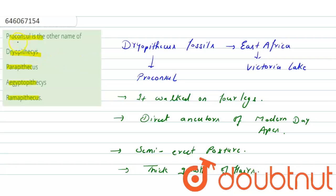The question says that Proconsul is the other name of, so Proconsul is also called Dryopithecus. That is why Dryopithecus will be the correct answer, while the rest of the options are incorrect.